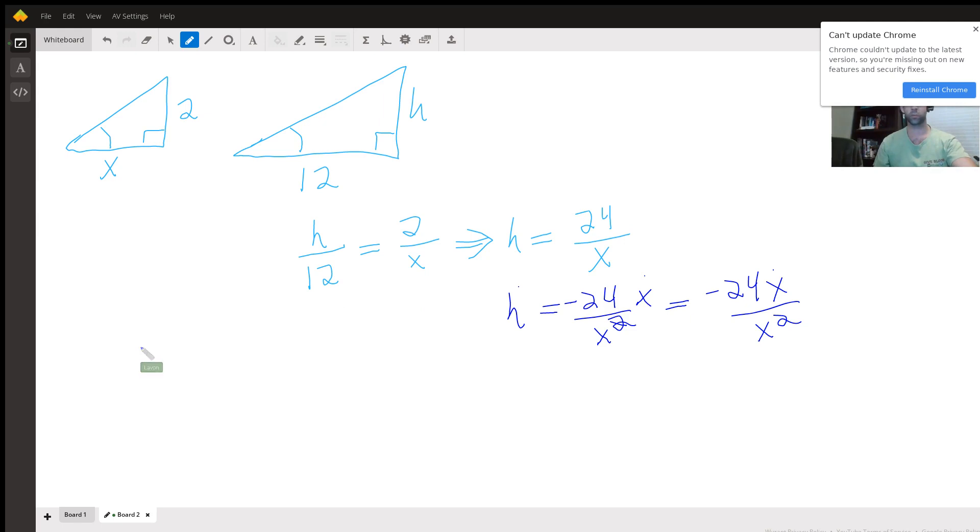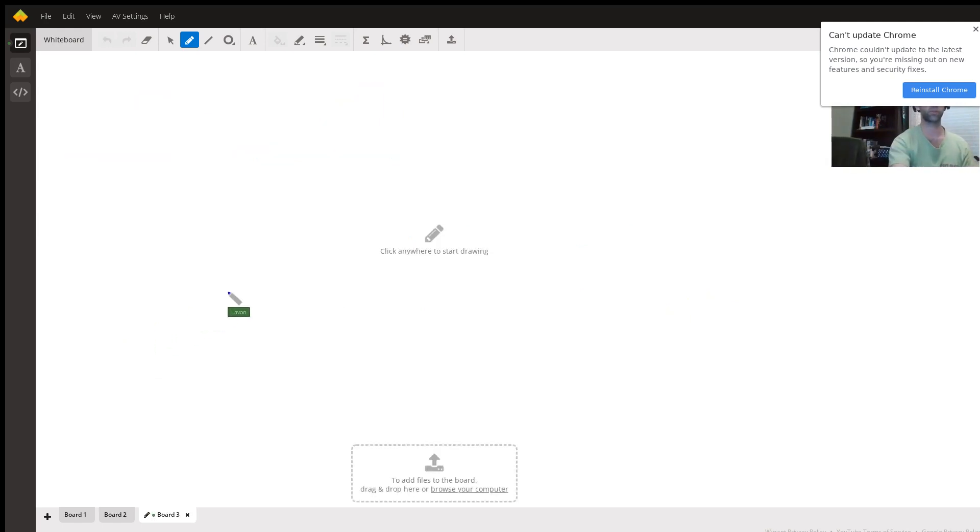Throw this up on a new board and we'll do the final answer. So h dot negative 24 x dot over x squared. Now x dot here is the change in x with respect to time, and we know that that's how fast the person's position is changing with respect to the spotlight.